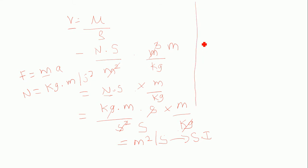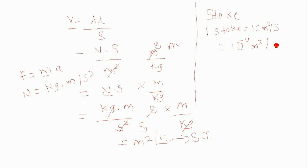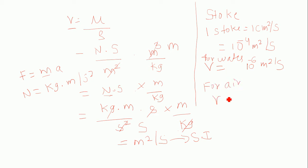Another unit of kinematic viscosity commonly used is the stoke. One stoke equals one centimeter square per second, which is equal to 10 raise to minus 4 meter square per second. For water, the kinematic viscosity is 10 raise to minus 6 meter square per second. For air, the kinematic viscosity is 15 into 10 raise to minus 6 meter square per second. These values are helpful in solving problems.